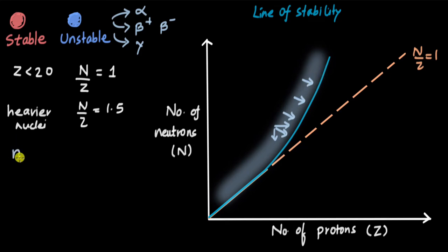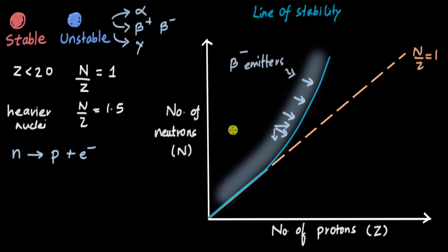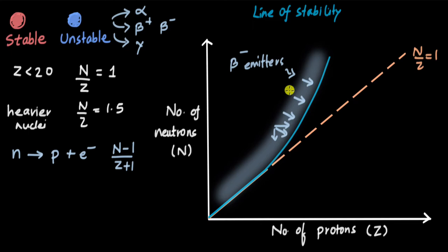Nuclei lying in this shaded region above the line undergo beta minus decay, where a neutron changes to a proton and an electron is emitted. So they are called beta minus emitters. One neutron decreases and one proton increases, meaning the ratio n/z decreases — which is good, because the ratio was higher than required. The number of neutrons was more than needed.